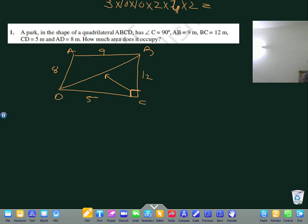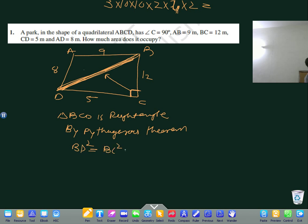We will directly find BD because in order to get the area of the quadrilateral, we will divide it into two triangles. One triangle is right angle, and one triangle is normal. In triangle BCD, by Pythagoras theorem, BD square equals BC square plus CD square. So BD square equals 144 plus 25 equals 169. BD equals 13 meters.